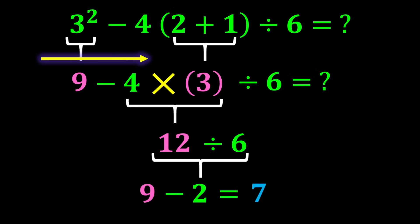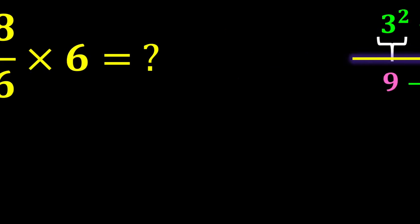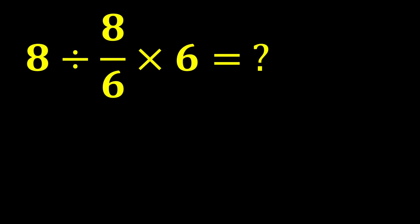Now let's move on to solving the question from the beginning of the video correctly. The expression is 8 divided by 8 over 6, multiplied by 6. In this expression, there is both multiplication and division, and if we move from left to right, we reach division first, so we perform the division first.